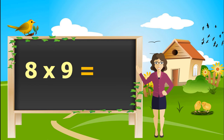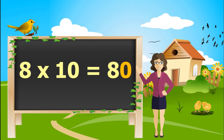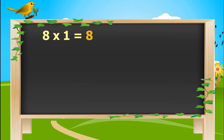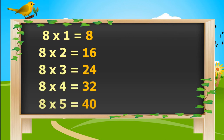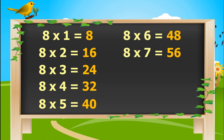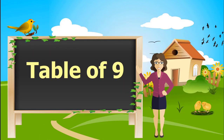8 nines are 72. 8 tens are 80. 8 ones is 8. 8 twos are 16. 8 threes are 24. 8 fours are 32. 8 fives are 40. 8 sixes are 48. 8 sevens are 56. 8 eights are 64. 8 nines are 72. 8 tens are 80. Let's learn table of 9.